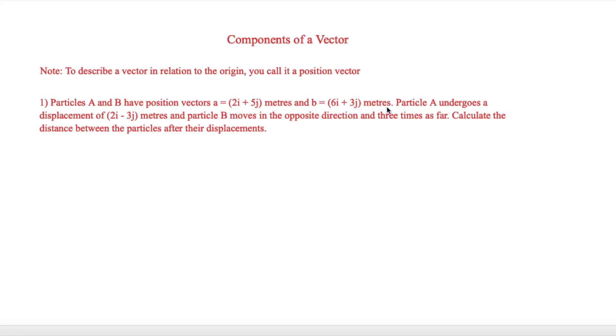Now particle A then undergoes a displacement of 2i minus 3j meters. And particle B moves in the opposite direction and three times as far. And we have to calculate the distance between the particles after their displacements.